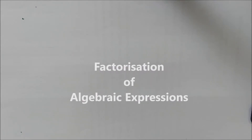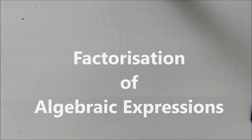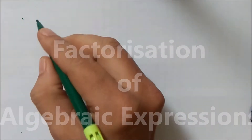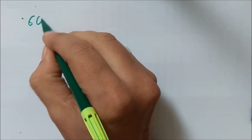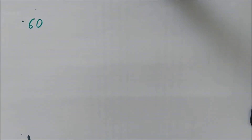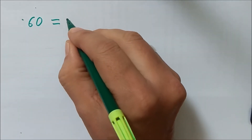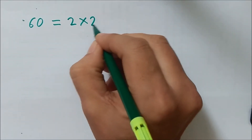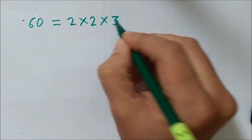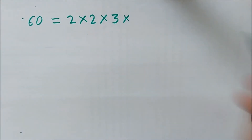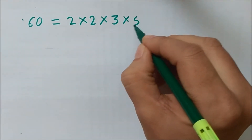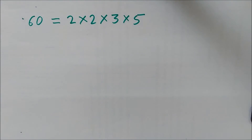Today we shall learn about factorization. Let us take a number, say 60, and write it as a product of other natural numbers. So this can be written as 2 into 2 into 3 into 5. All these are prime numbers and this is called prime factor form.